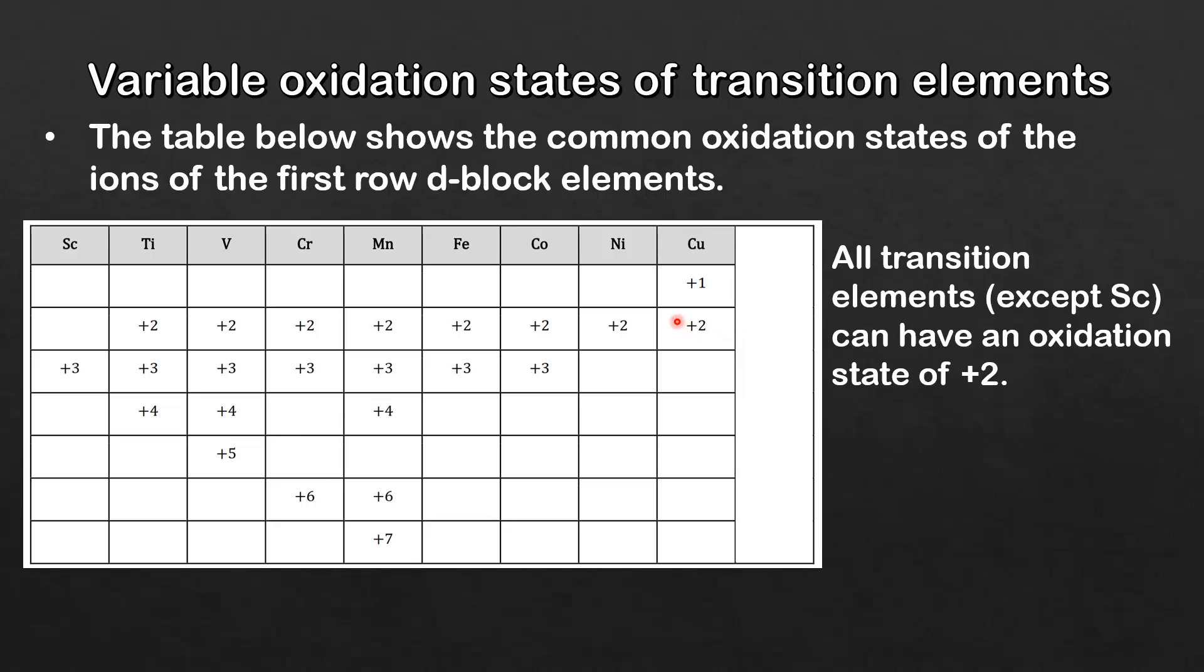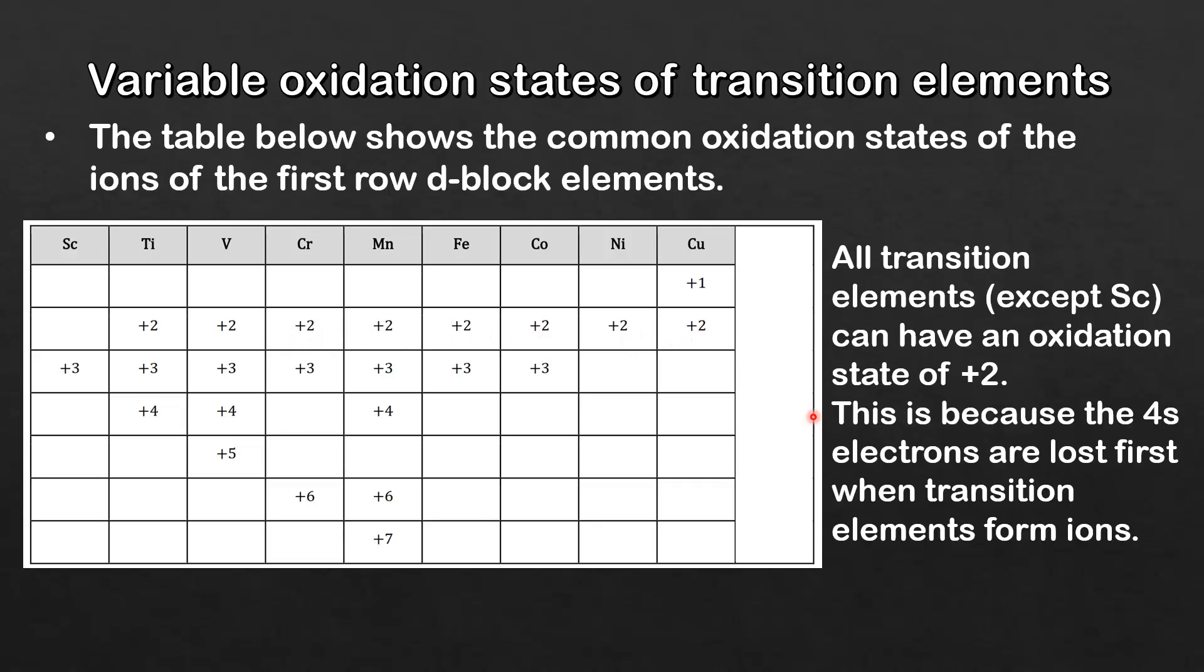As you can see, all the transition elements except scandium can have an oxidation state of plus 2. This is because the 4s electrons are lost first when transition elements form ions.